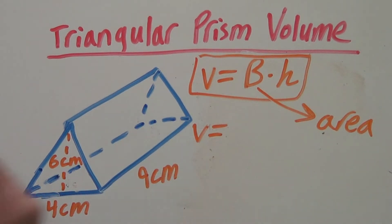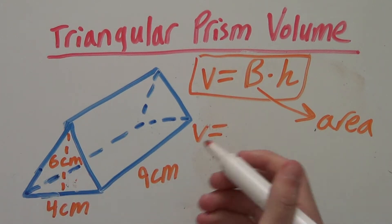We have volume equals our base and remember the base is the area of this triangle. So to find the area of this triangle, we use the formula of 1 half base times height.